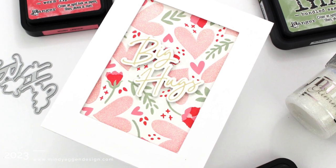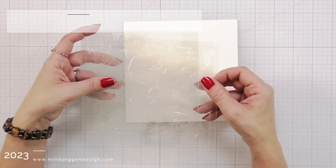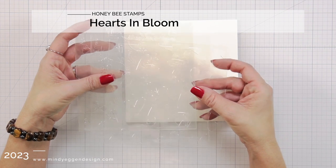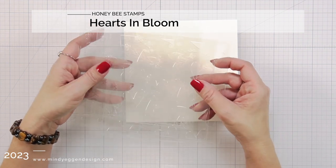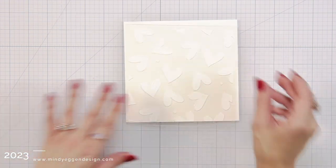This is a four-piece stencil and the stencils are clear so you can see your design through the stencil. They're all labeled at the top: layer 1, 2, 3, and 4.